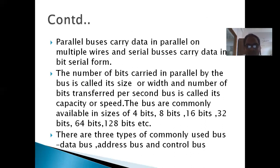Parallel buses carry data in parallel on multiple wires, and serial buses carry data in serial form. The number of bits carried in parallel by the bus is called the size or width, and the number of bits transferred per second is called the capacity or speed of the bus.